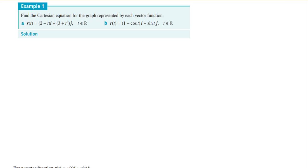So r(t) is a position vector, so you can always write that as xi plus yj. And that's going to be equal to (2 - t)i plus (3 + t²)j. So equate the coefficients. We'll equate the coefficients for i.